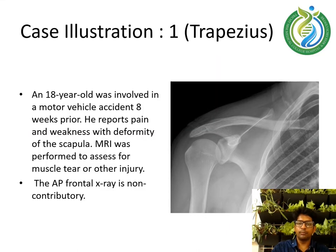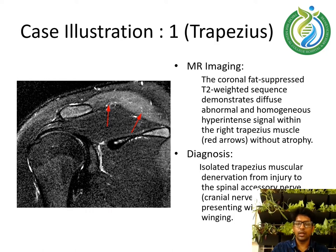Case illustration 1 — Trapezius. An 18-year-old was involved in a motor vehicle accident eight weeks prior. He reports pain and weakness with deformity of the scapula. MRI was performed to assess muscle tear or other injury. The AP frontal X-ray is non-contributory. A coronal fat-suppressed T2-weighted sequence demonstrates diffuse abnormal homogenous signal within the right trapezius muscle without atrophy, indicated by the red arrow. Diagnosis: isolated trapezius muscular denervation from injury to the spinal accessory nerve, the 11th cranial nerve.